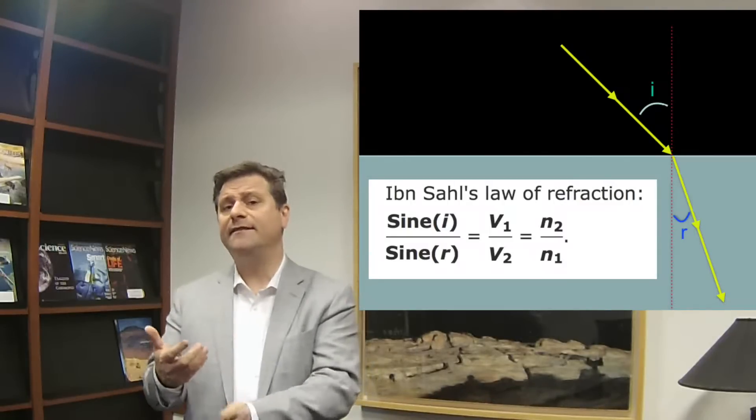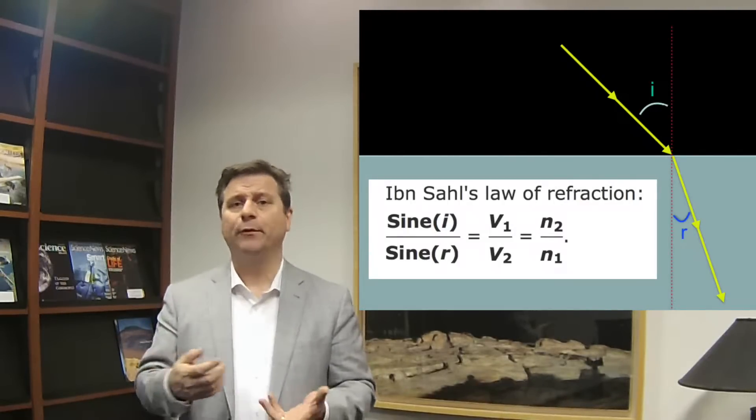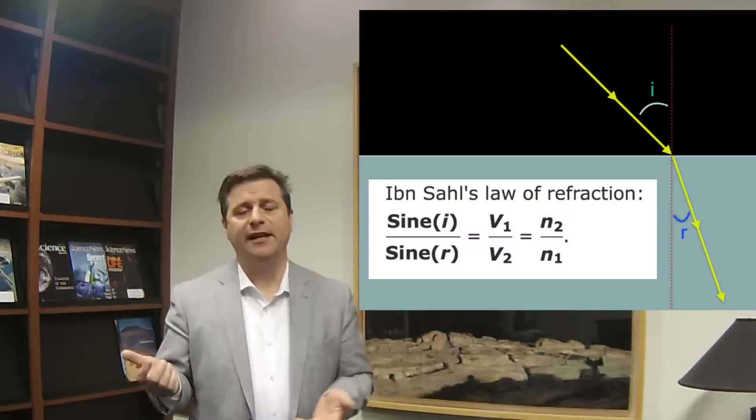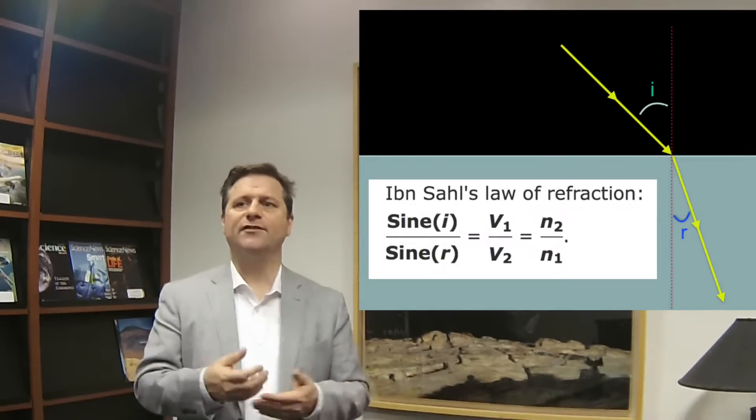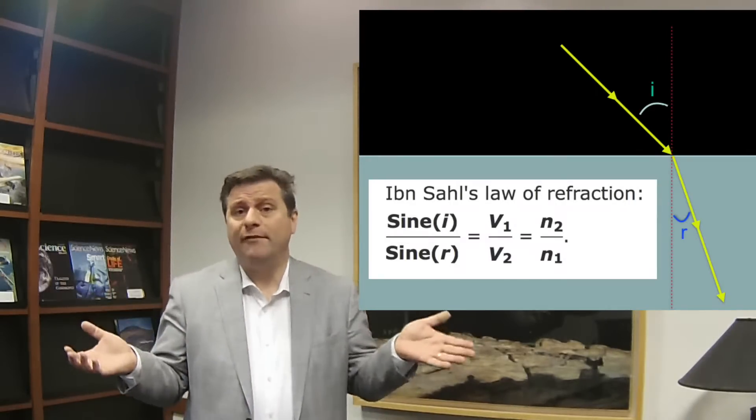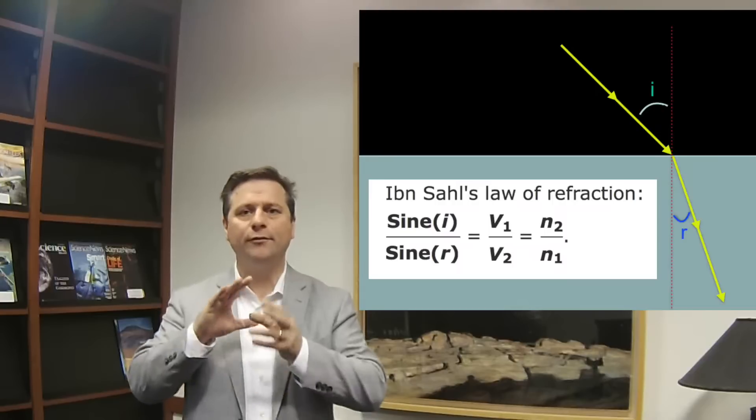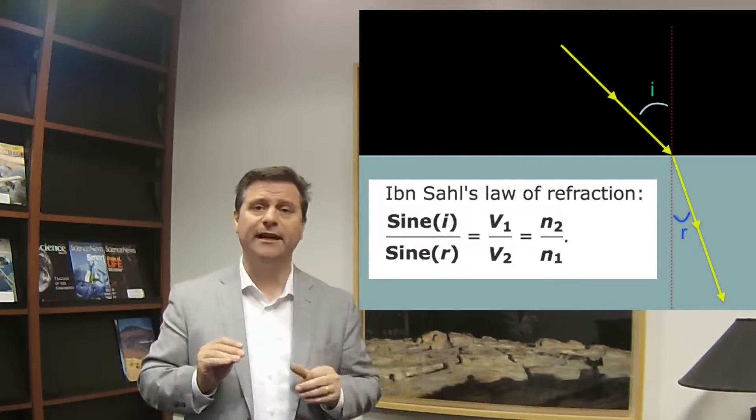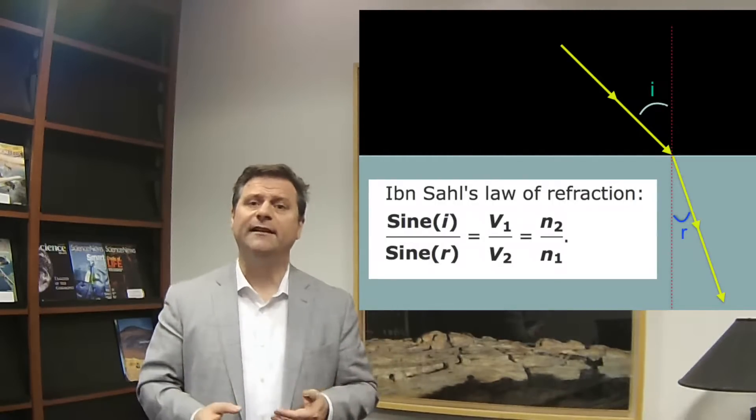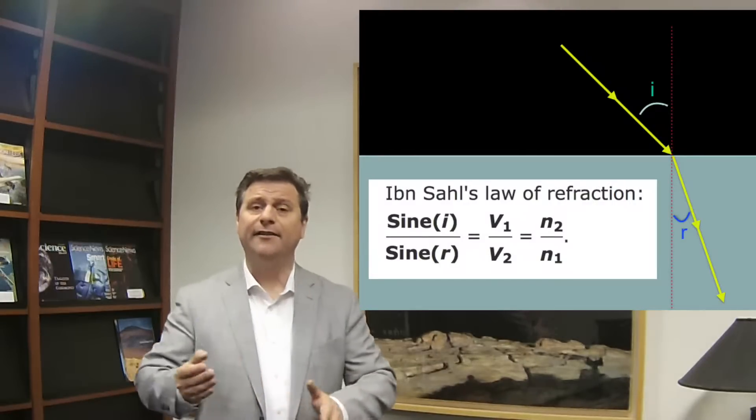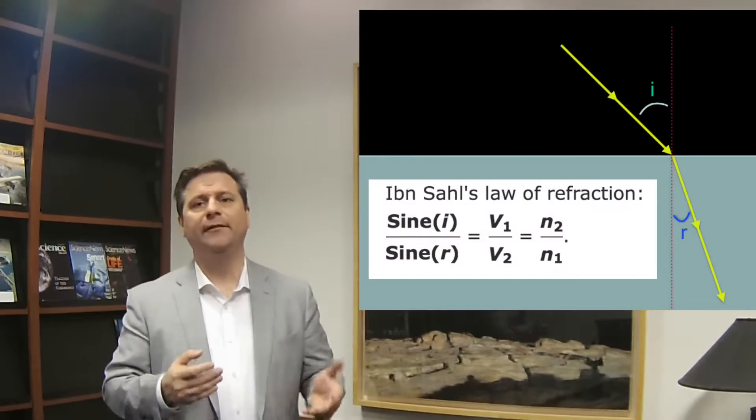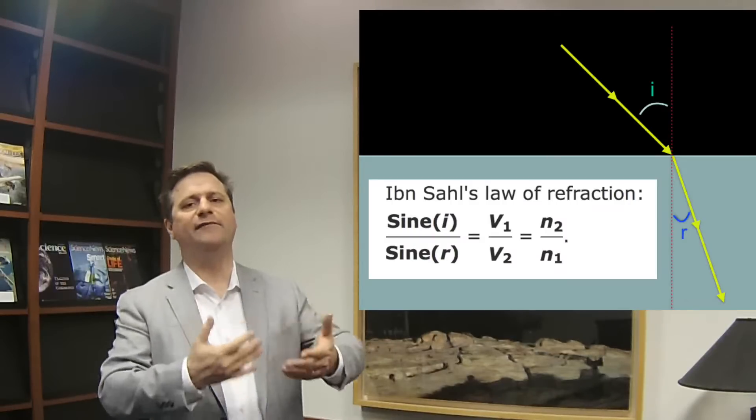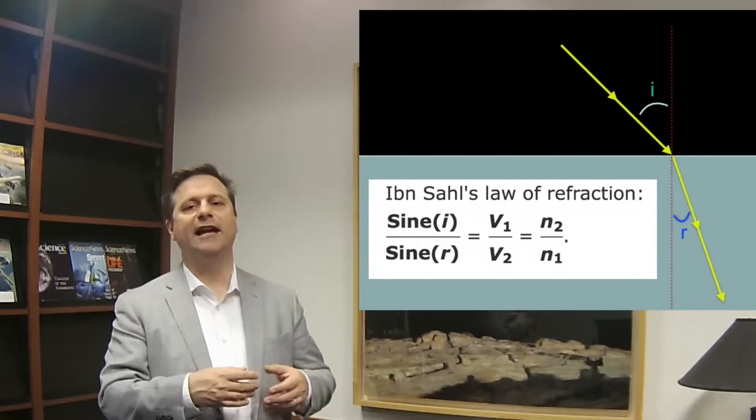Ibn Saul from Iraq didn't have any way of measuring the speeds of light. He knew the ratio and the proportionality. The speed of light is different from one medium to another - the speed of light in air is different than the speed of light in water, and that's why there is refraction. Refraction is a manifestation of the differing speeds of light in the two media.